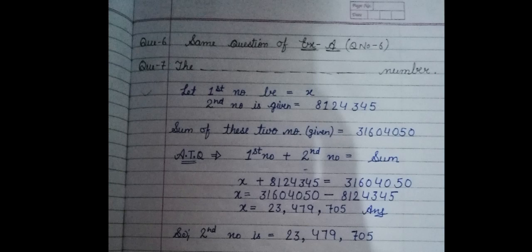Let's come to the next question which is seven. The sum of two numbers is this, how much? Yes, read this number: three crore 16,04,050. If one of the numbers is this, find the other number.